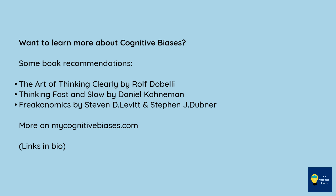Want to learn more about cognitive biases? Some book recommendations: The Art of Thinking Clearly by Rolf Dobelli, Thinking Fast and Slow by Daniel Kahneman, and Freakonomics by Stephen D. Levitt.